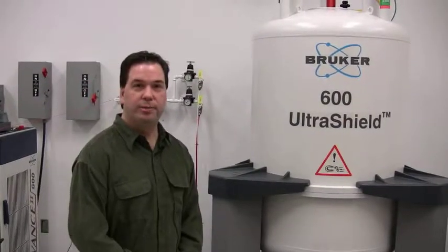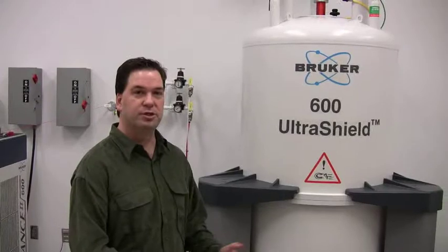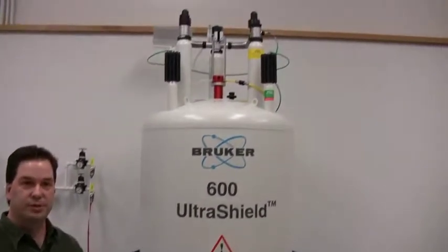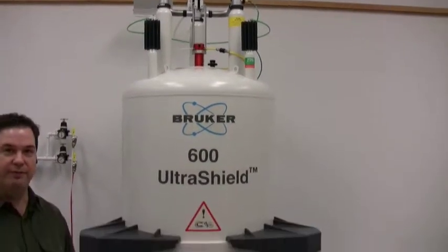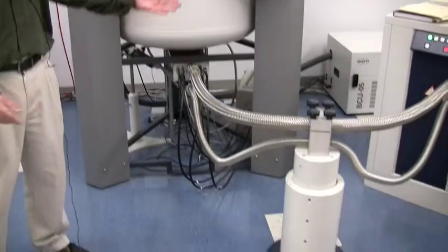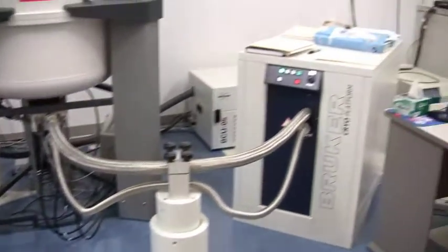This is a 600 megahertz spectrometer. This is the newest spectrometer in the facility. This is the latest Bruker, what's called an AV3-type console, and as you can see, it's equipped with a cryoprobe.